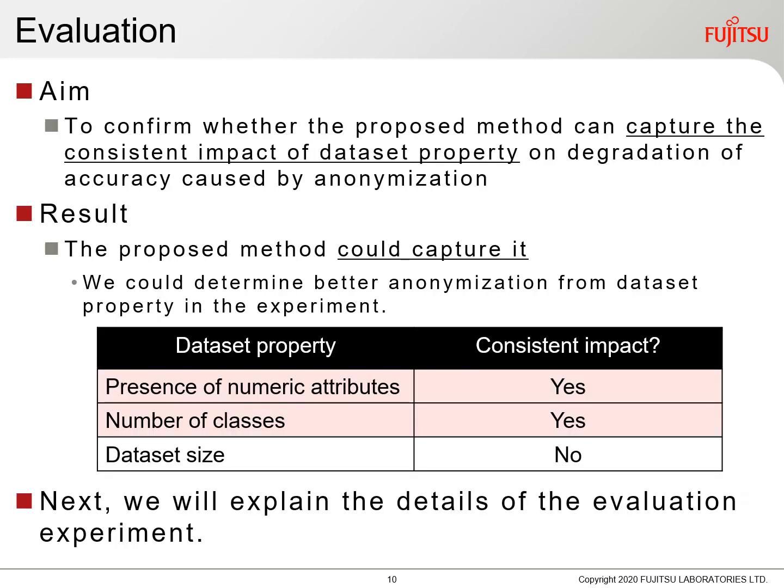The advantage is that it enables us to measure and compare degradation with a focus on only one dataset property. The evaluation was done using experiments. We experimented to confirm whether the proposed method can capture the consistent impact of dataset properties on degradation of accuracy caused by anonymization. We could capture consistent impacts on two dataset properties, and we could determine better anonymization from dataset properties in the experiment.